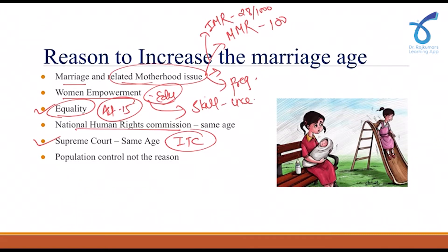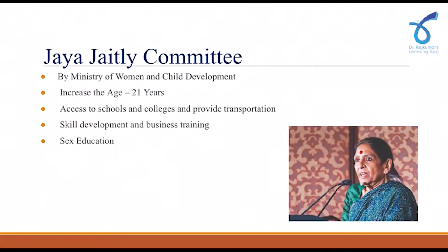With respect to these reasons and background, population control was not the aim of bringing this act. This is because the National Family Health Survey recently showed that the fertility rate has come down to 2.0, which is less than the replacement rate that India was targeting. So the population is automatically getting controlled, and this act does not aim to control the population.